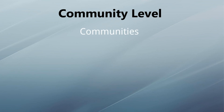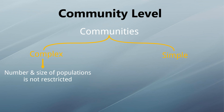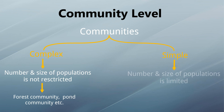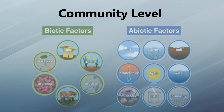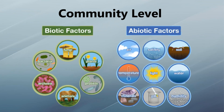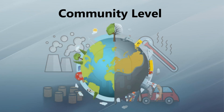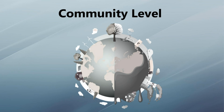Communities may be complex or simple. In complex communities, the number and size of populations is not restricted — for example, a forest community or a pond community. Other communities may be simple, in which the number and size of populations is limited — an example is a fallen log with various populations under it. Changes in biotic or abiotic factors may have drastic and long-lasting effects on communities.